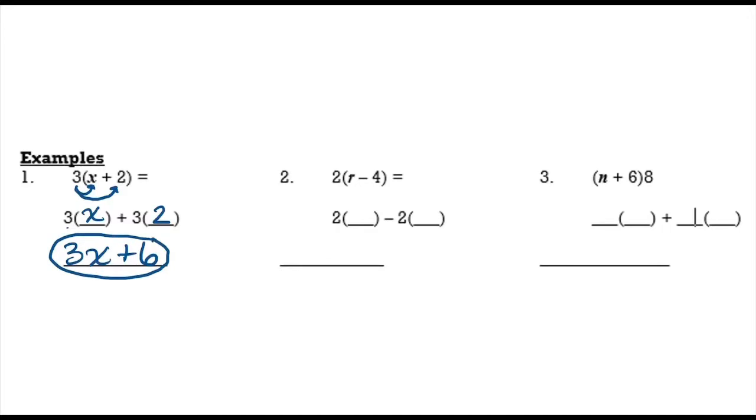All right, in the second example you'll notice we're distributing a 2. So we're going to do 2 times R, the first term is R, and then minus 2 times 4. Well, 2 times R is just 2R minus 2 times 4 is 8. So that's it, 2R minus 8. If you also want to write it like this you can, so 2R plus negative 8. Both those answers are perfectly fine.